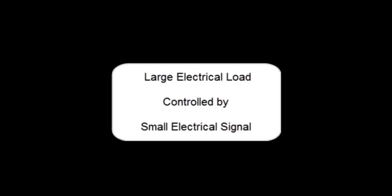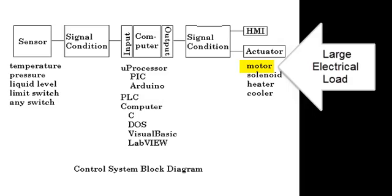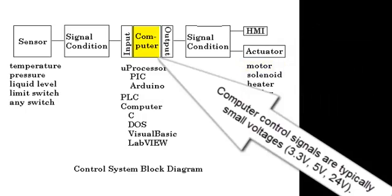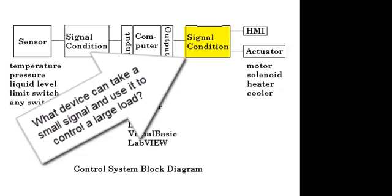This video explains how a large electrical load can be controlled by a small electrical signal. A large electrical load might be a motor. A computer control signal typically has a small output voltage: 3.3 volts, 5 volts, or 24 volts. What device can take a small signal and use it to control a large load?